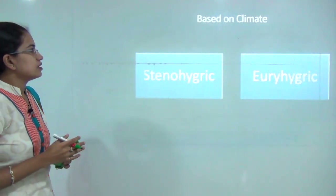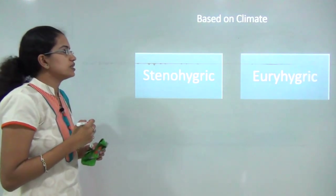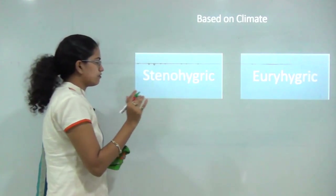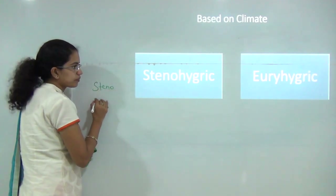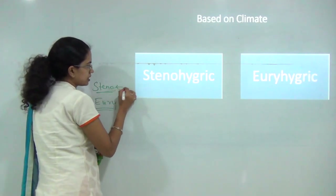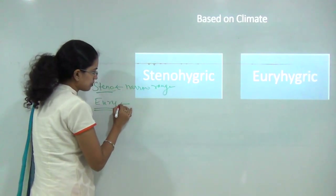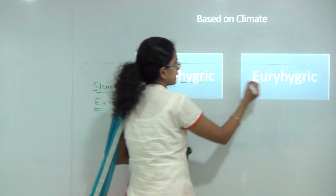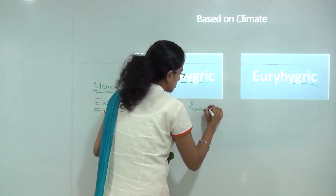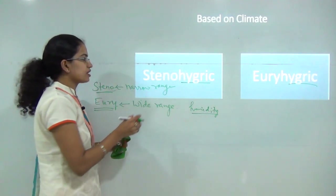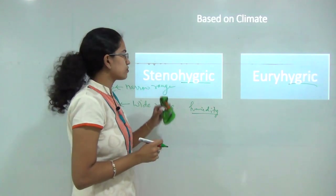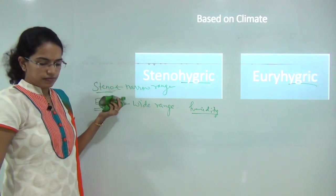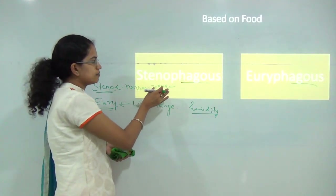Animals can also be classified based on different parameters. Based on climate, specifically humidity, animals are divided into stenohaygric — tolerating only a narrow range of humidity — and euryhygric — tolerating a wide range of humidity. The prefix 'steno' refers to a narrow range while 'eury' refers to a wide range; 'hygric' relates to humidity.